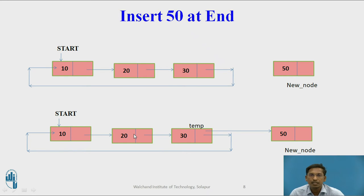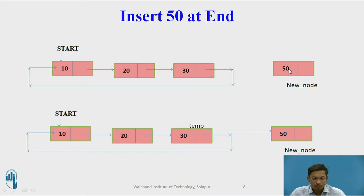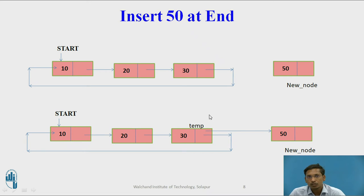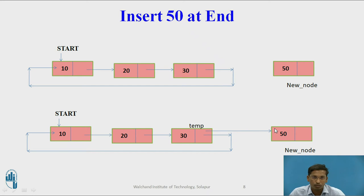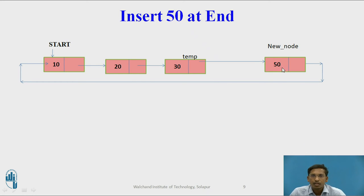Now suppose I want to insert 50 at the end. This is how the existing singly circular linked list looks. First, allocate memory for the new node and store 50 in its data part. Next, traverse from the first node to the last node using a temporary variable temp. Once temp points to the last node, set temp's next to the new node, and set the new node's next to store the address of start.